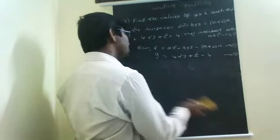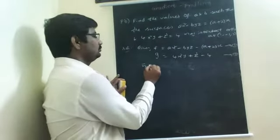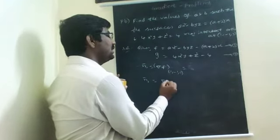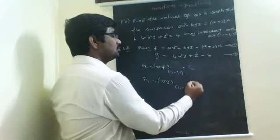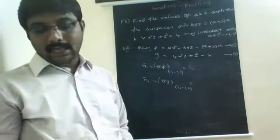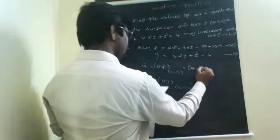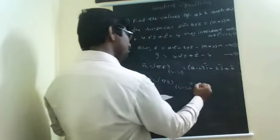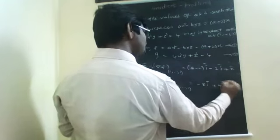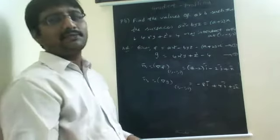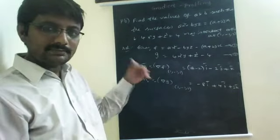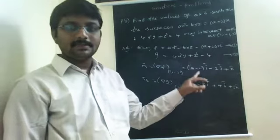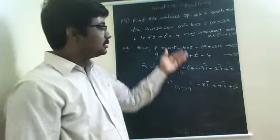Now we find N1 bar and N2 bar. N1 bar is del F at the point (1, −1, 2), and N2 bar is del G at the same point. Using the gradient formula, N1 bar equals i ∂F/∂x plus j ∂F/∂y plus k ∂F/∂z, and similarly del G. We get N1 bar equals (A − 2)i minus 2j plus k, and N2 bar equals −8i plus 4j plus 2k.